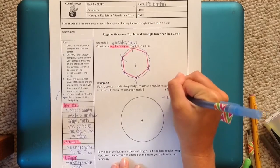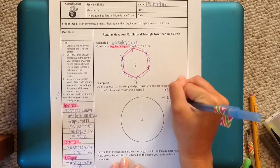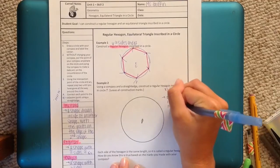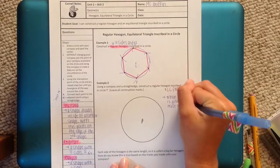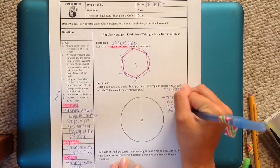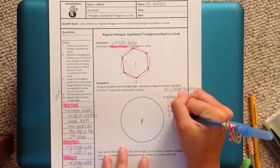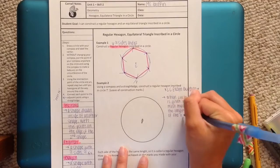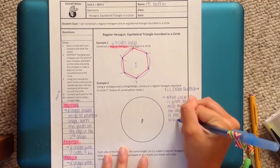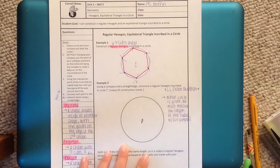So I'm going to write myself a note. When the circle is given, we must measure the length of the radius with our compass. And I'm going to show you how to do that, don't worry.